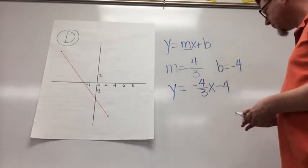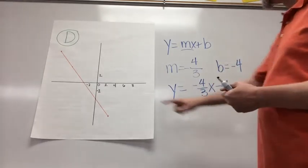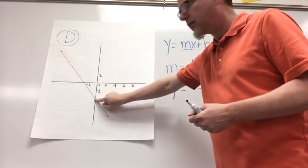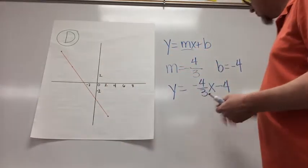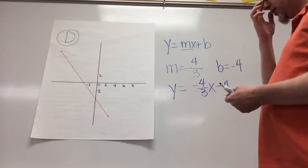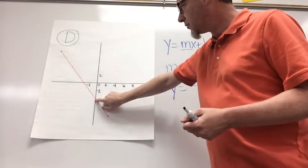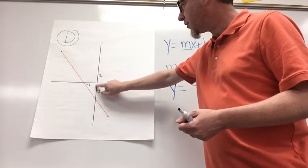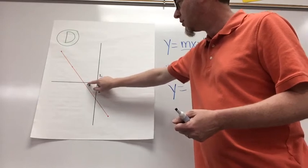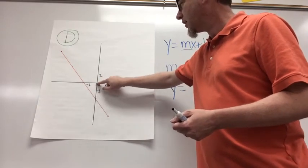So let's just talk about that one more time. Where did this negative 4 come from? The point where it crosses the y-axis. And where did I get negative 4 over 3? Well, I start at this point right here, go up 1, 2, 3, 4, and to the left 1, 2, 3, so my slope is negative 4 over 3. And then there's my equation.